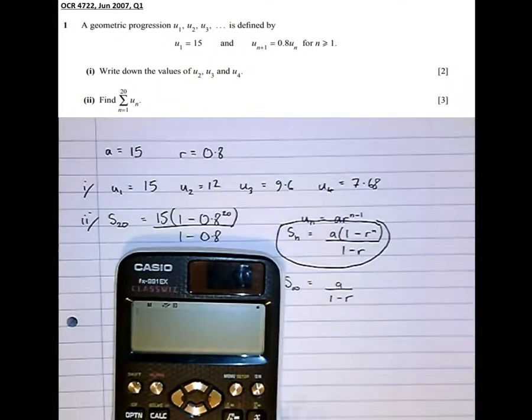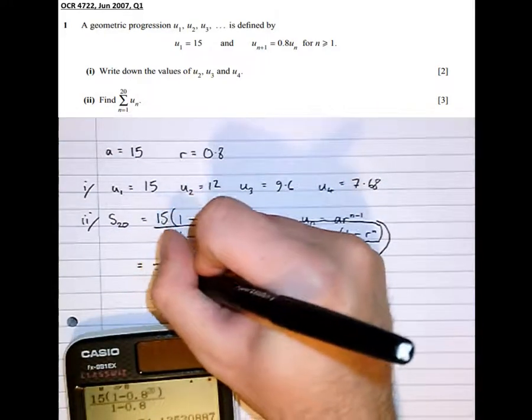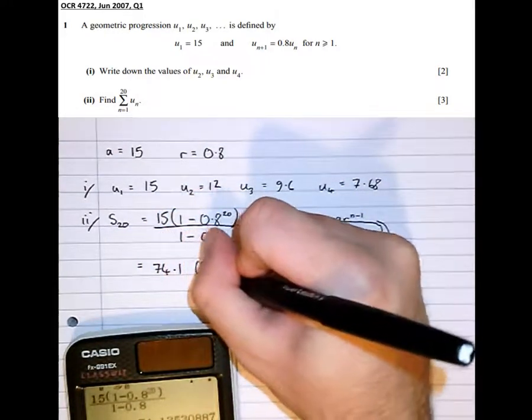Then simply typing that in the calculator, 15, 1 minus 0.8 to the power of 20 over 1 minus 0.8 equals 74.1 to three significant figures.